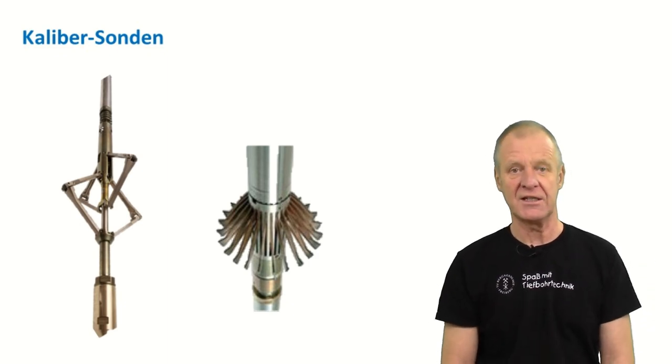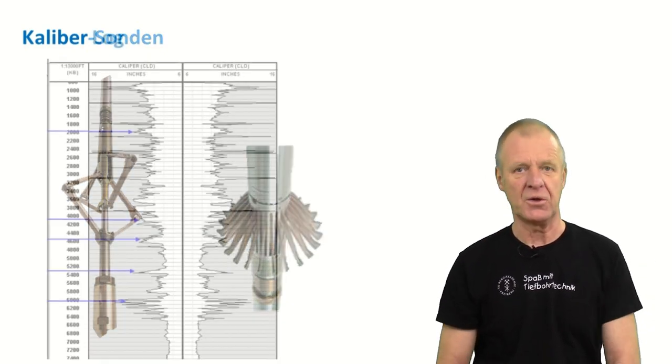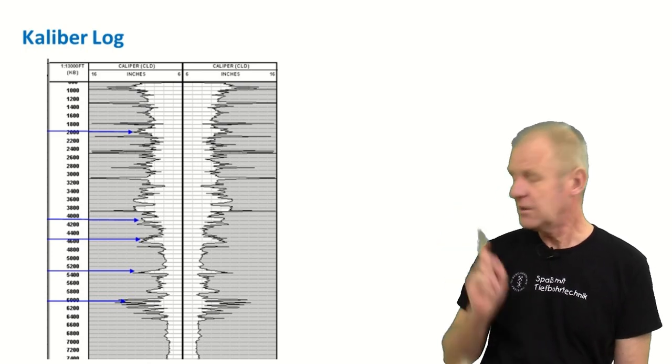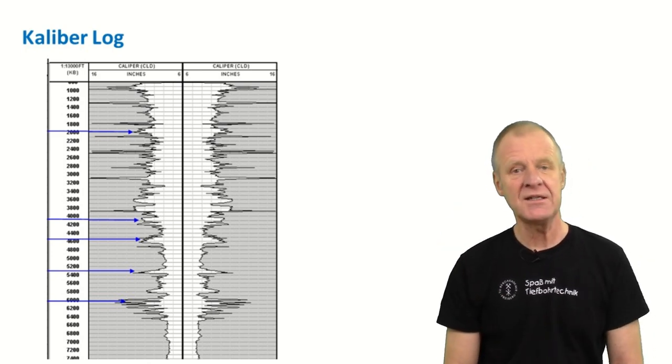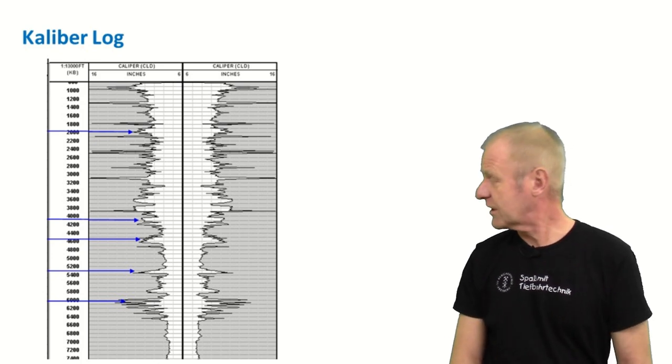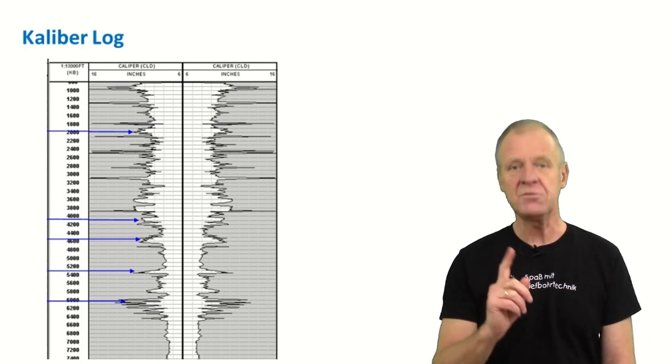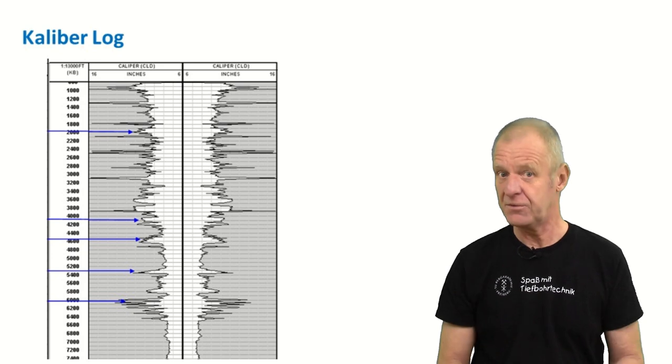The whole measurement finally results in a caliper log, just like the one you see here behind me. This is what the borehole actually looks like. And with this log, we can now calculate how much cement is needed for the cement job.